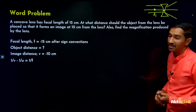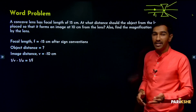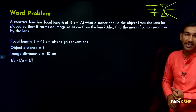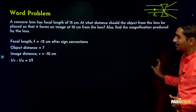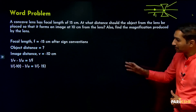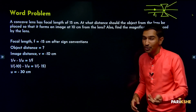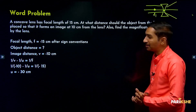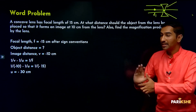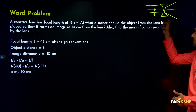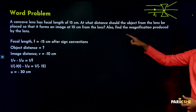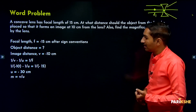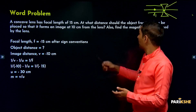Now use the formula: 1/v minus 1/u equals 1/f. Substituting the values and solving, we get u equals minus 30 centimeters. The negative sign confirms the object is to the left side of the optic center.